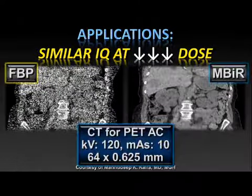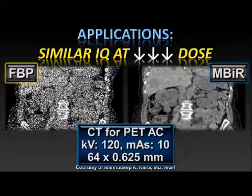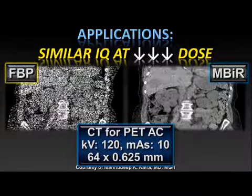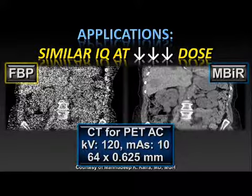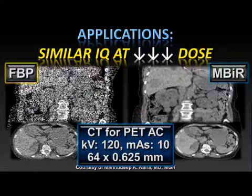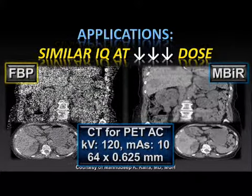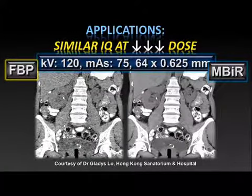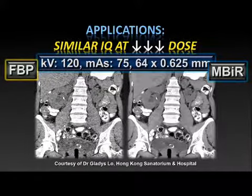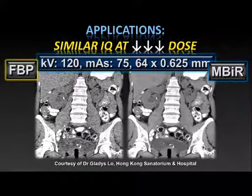Here's one from Dr. Kalra. This is an attenuation-corrected image from PET — a terrible image using filtered back-projection, but with MBIR on the right, at least in terms of attenuation correction, you have a much better image, albeit far from perfect. That was a remarkably low-dose technique at an MAS of only 10. Here's another example: filtered back-projected on the left, iterative reconstruction on the right, MAS of 75, with a nice increase in image quality with iterative reconstruction.